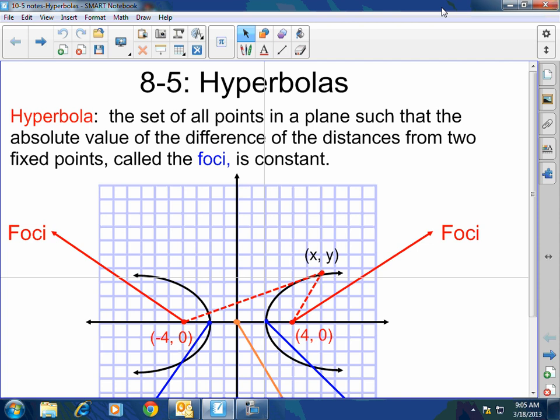A hyperbola is the set of all points in a plane such that the absolute value of the difference of the distances from two fixed points called the foci is constant.